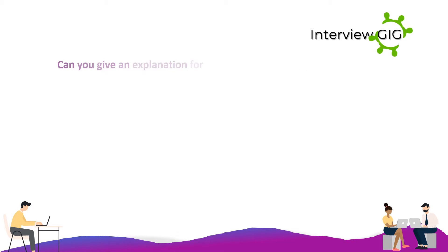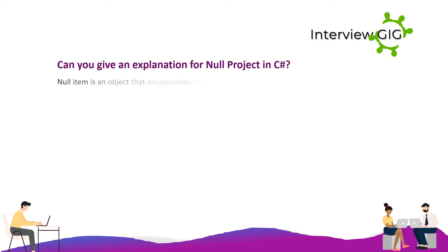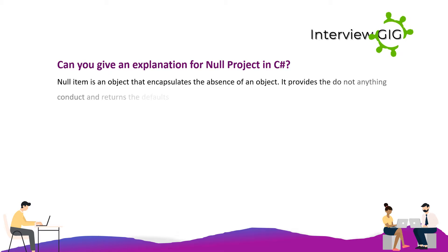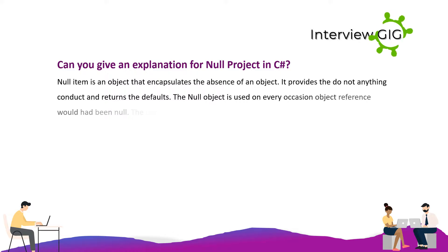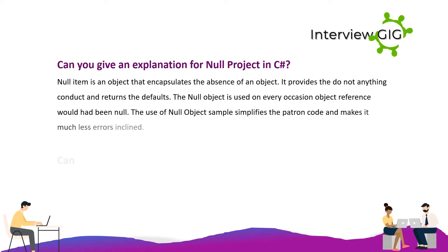What is the null object pattern in C#? A null object is an object that encapsulates the absence of an object. It provides do-nothing behavior and returns defaults. The null object is used whenever an object reference would have been null, and its use simplifies client code and makes it less error-prone.